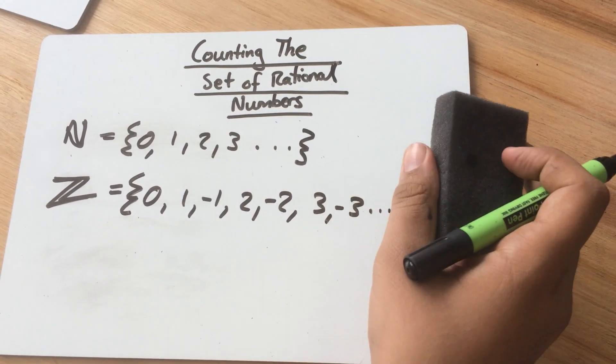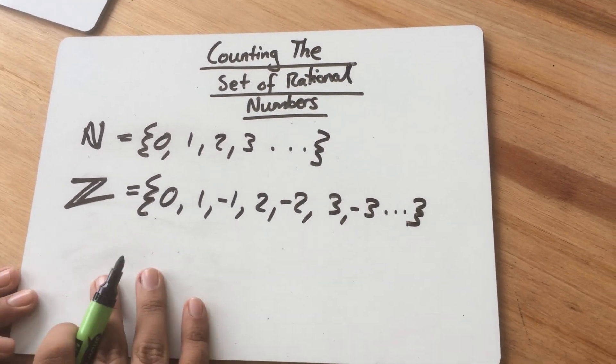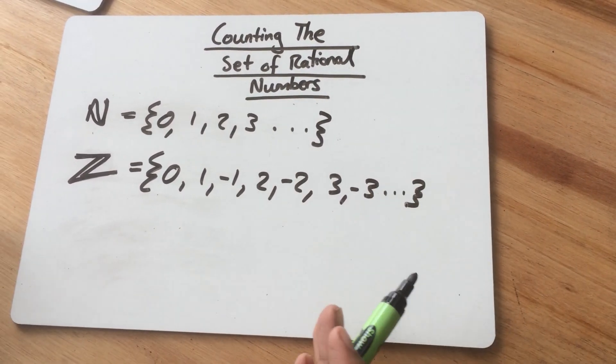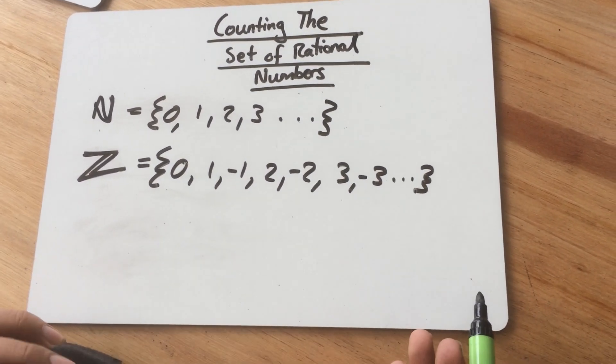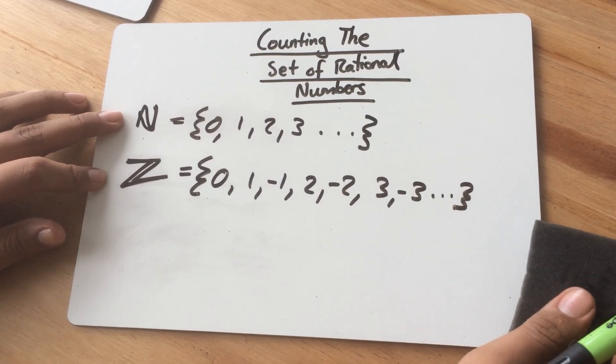Now, if a set is countable, it doesn't mean that one can count all the elements in that set, because each set has infinite elements. Counting just means placing the elements in order. So now we've counted the natural numbers and the integers.